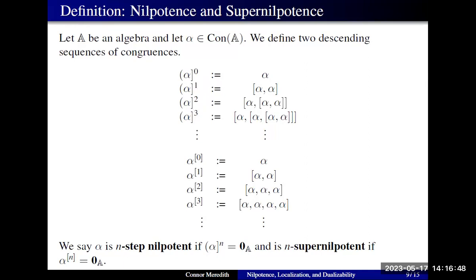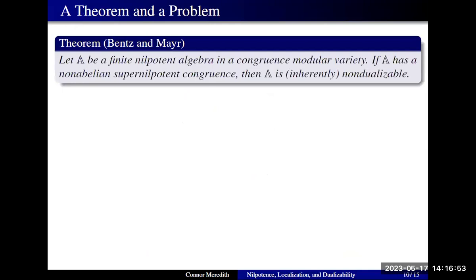This would have something to do with dualizability. We do have a result from Benson-Meyer: given a finite nilpotent algebra A in a congruence modular variety, if A has a non-abelian super nilpotent congruence, then A is not dualizable. So somehow, non-abelian super nilpotence is a barrier to dualizability.